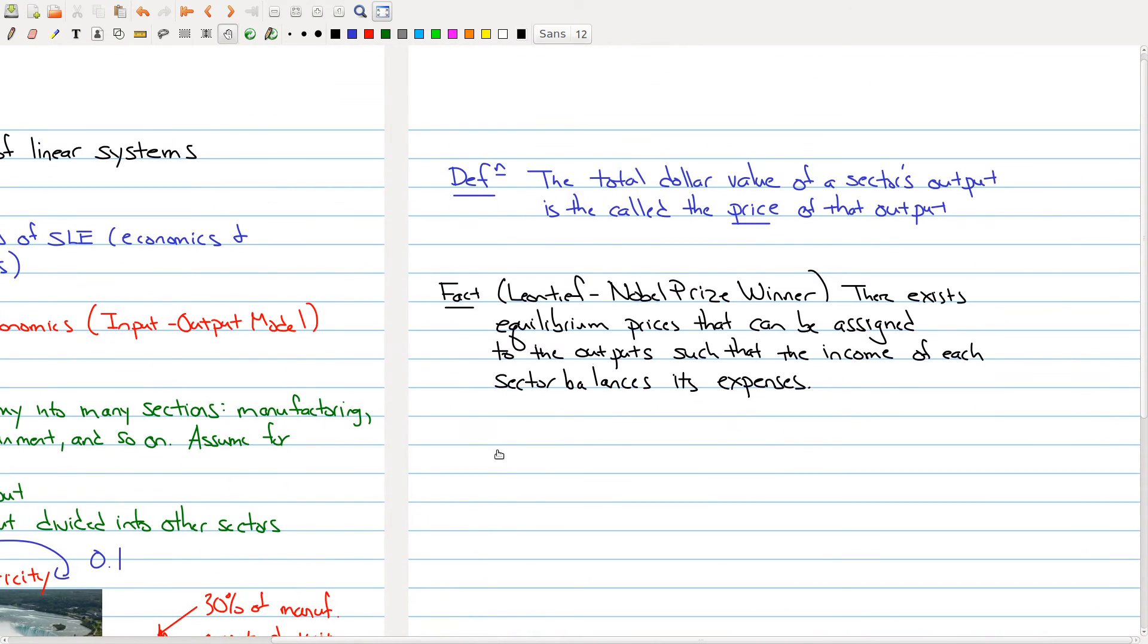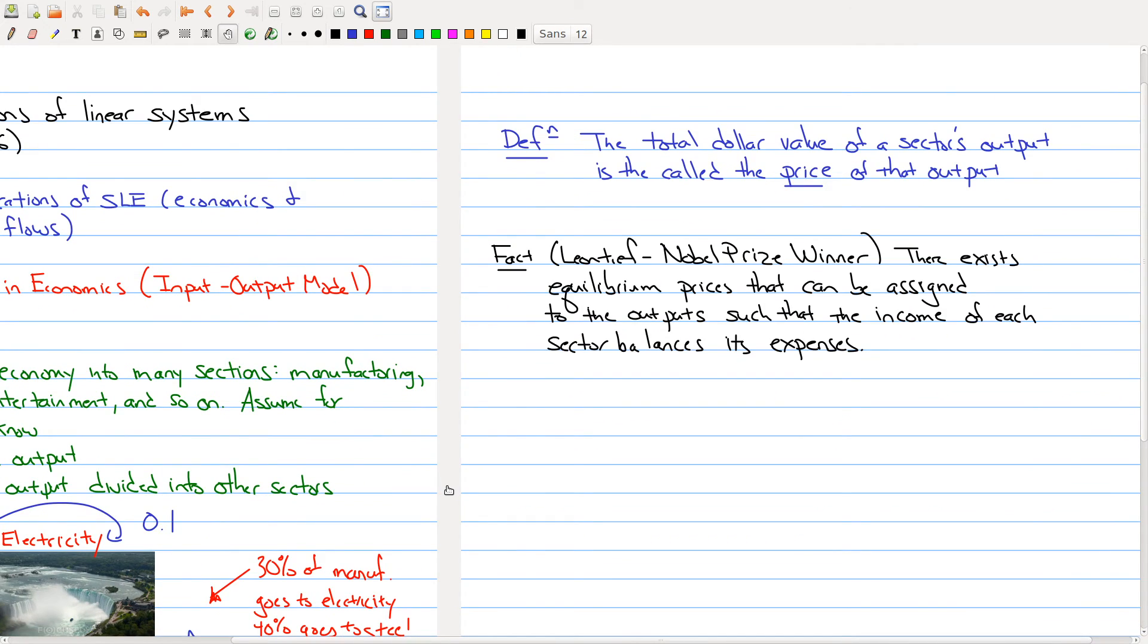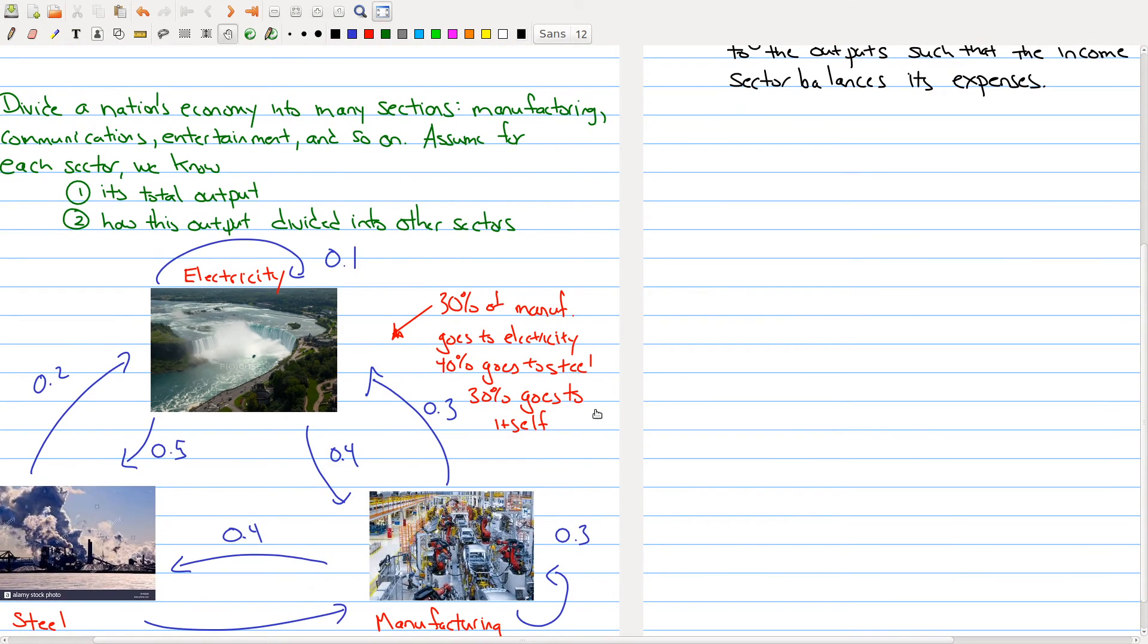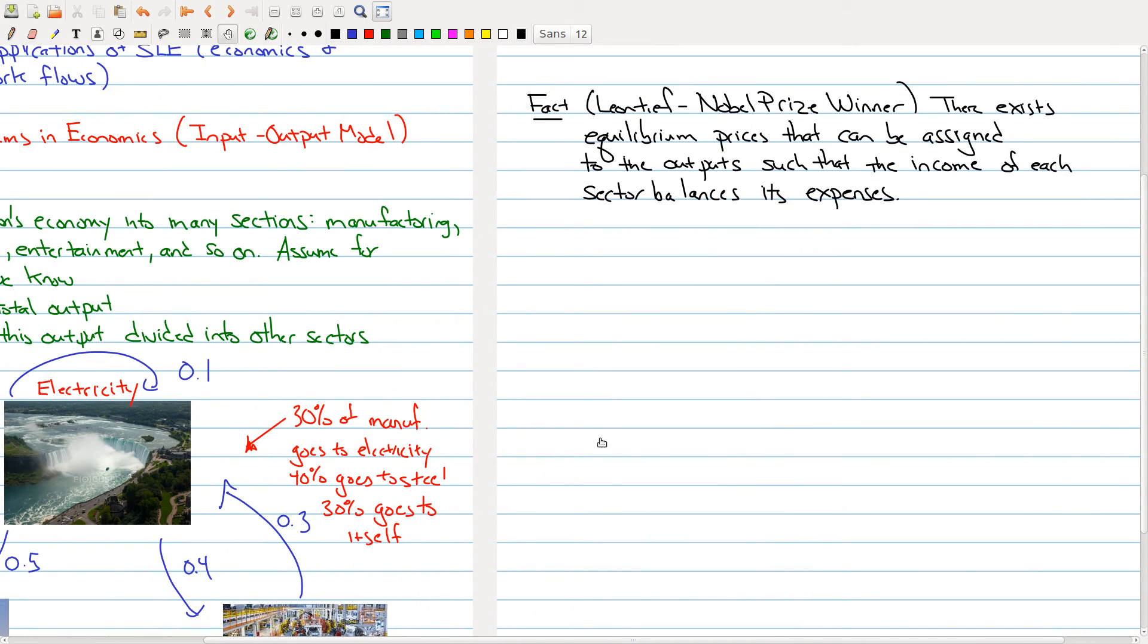And we have the following fact that was first proved by Leontif. Hopefully I pronounced his name right. He was a Nobel Prize winner, and he proved that there exists an equilibrium price that can be assigned to the output such that the income of each sector balances its expenses. So it's a little bit long-winded, but what it means is we have a system like this. Steel, manufacturing, and electricity can figure out a price for their output such that everybody's expenses is equal to their income. That is what the equilibrium part here is coming to.